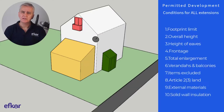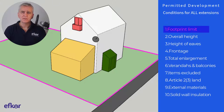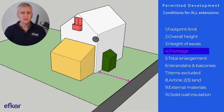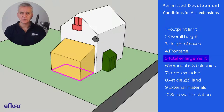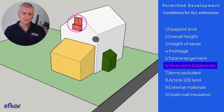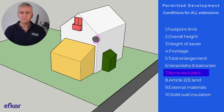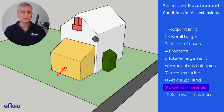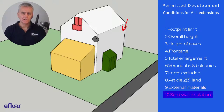Here are the 10 conditions that apply to the extensions you will see in videos three to six: first, the footprint limit; next, overall height; then height of eaves; frontage; total enlargement; verandas and balconies; items specifically excluded; article 2-3 land; external materials; and finally solid wall insulation.